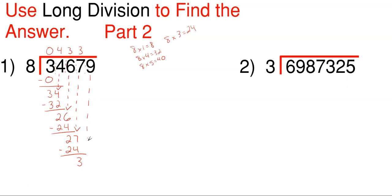And then we'll drop our last number of 9 all the way down and make this 39. How many times does 8 go into 39 without going over? It goes in 4 times, because 5 times gets us right to 40, which is just over 39. So we go with 4 and place that directly above the number we just dropped. 8 times 4 gives me 32, and I'm left over with 7. I have no more numbers to drop, so whatever I have at the bottom is called my remainder — symbolized with a little r and then the number. So 34,679 divided by 8 equals 4,334 with a remainder of 7.